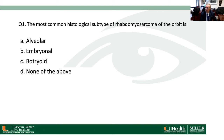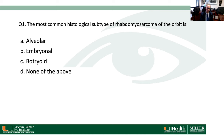Question 1: The most common histological subtype of rhabdomyosarcoma is embryonal. Most of you got that right — embryonal is the most common type, alveolar is the second most common, and about 80 percent of rhabdomyosarcomas are the embryonal subtype.